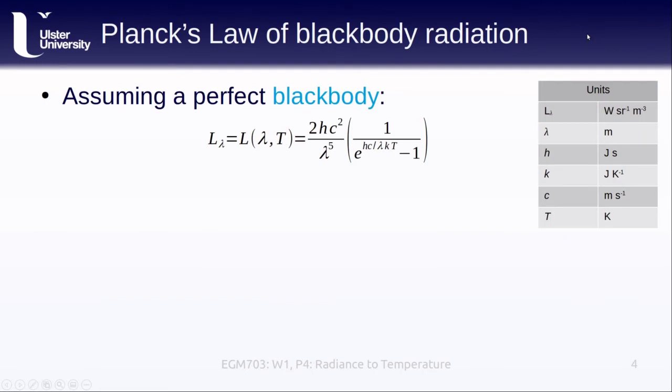Once we have radiance, we can use Planck's law of blackbody radiation to estimate the radiant temperature. We've seen this equation before, but this form of the equation gives us the spectral radiance as a function of wavelength and temperature. The constants here are h, which is Planck's constant, k, which is the Boltzmann constant, and c, which is the speed of light in a vacuum.